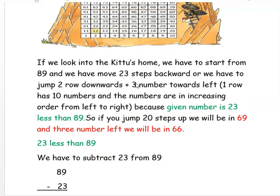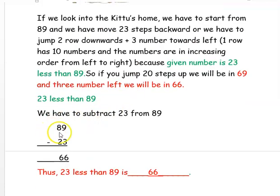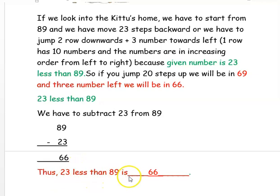We check our answer using subtraction: 89 minus 23 — 9 minus 3 is 6, and 8 minus 2 is 6 — so 23 less than 89 is 66. Hope you have understood how to add or subtract numbers using the 10 into 10 number grid. Thank you for watching the video.